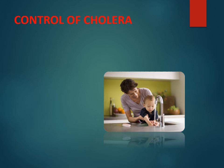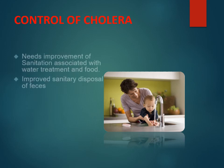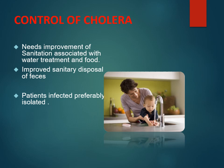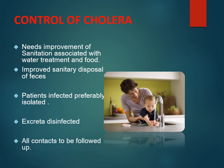Cholera is associated with poor hygienic conditions in overcrowded areas. Control requires improvement of sanitation, water treatment, food safety, and improved sanitary disposal of faeces. Infected patients must be isolated to prevent transmission to others, excreta should be disinfected, and all contacts need to be followed up.